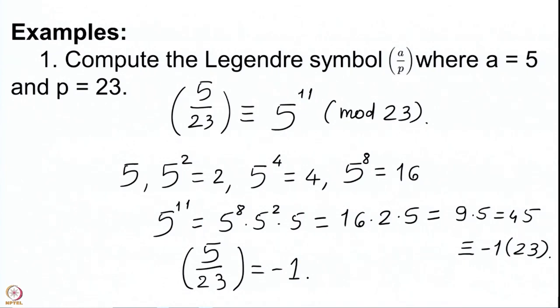We do not have to compute the 11 squares modulo 23 and then observe that 5 does not figure in that set of 11 elements, and therefore 5 must be a non-square and hence its Legendre symbol is minus 1. This is the calculation we avoid by using the formula that the Legendre symbol of a by p is simply a certain power of a modulo p.